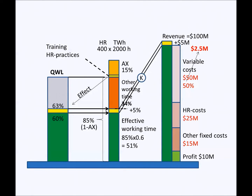Therefore, 5 million dollars more revenue means, in this case, 2.5 million dollars more variable costs. Because other costs are not increased, there will be 2.5 million dollars improvement at the operating profits. Improving intangible human assets, there will be more production capacity without fixed cost increase. As a conclusion, this company makes 6,250 dollars more profit for each employee.